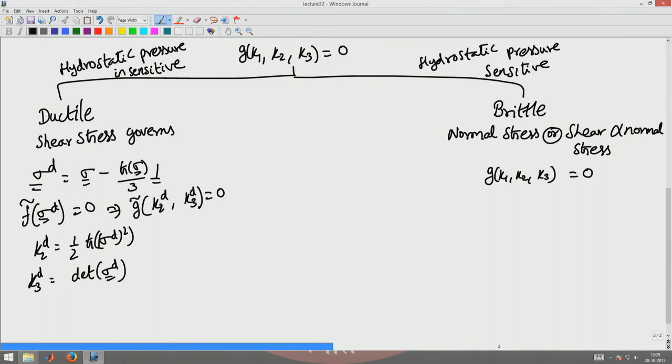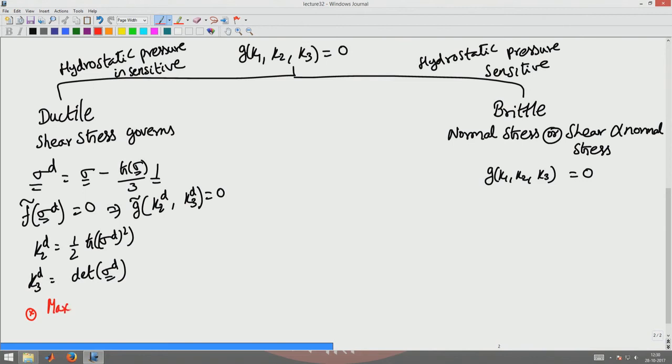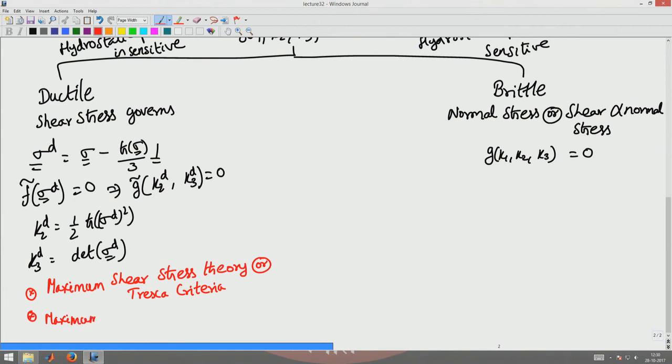Now, there are different failure theories within the same hydrostatic pressure sensitive and hydrostatic pressure insensitive failure theories. We will study a couple of them in each of these cases. In the hydrostatic pressure insensitive case, we will study two failure theories: what is called as the maximum shear stress theory or what is called as Tresca criteria, and the other theory that we will look at is maximum octahedral shear stress, more popularly called as von Mises criteria.